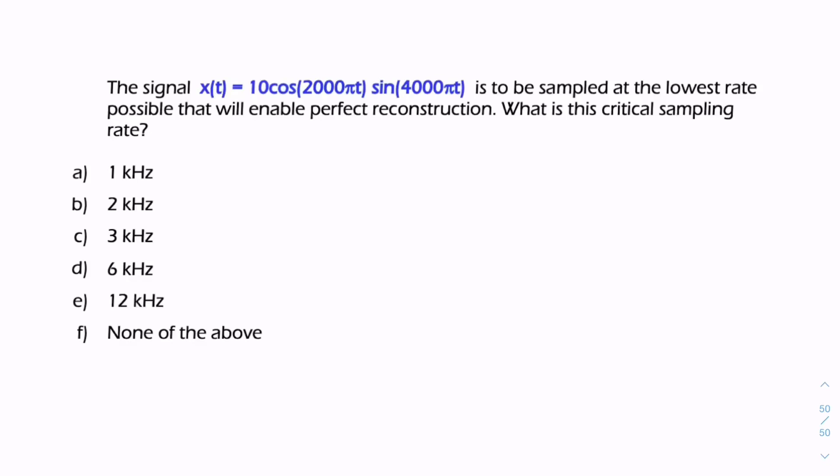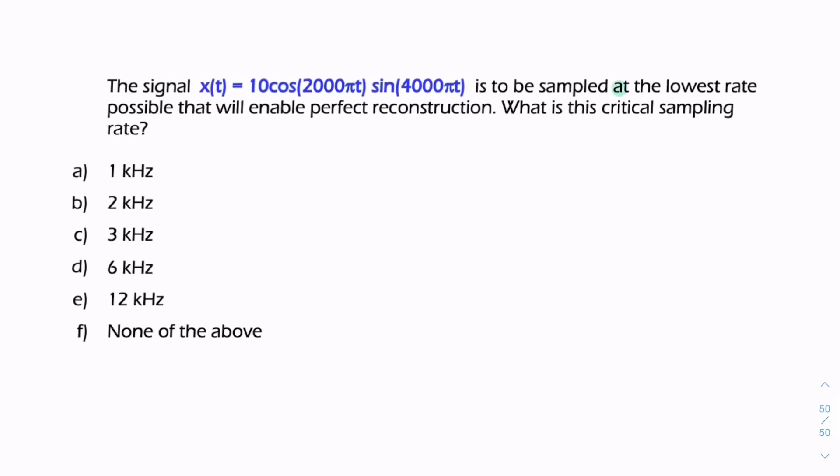In this question we're being asked for the lowest sample rate, so being asked for the Nyquist rate, and we're given a signal x(t) that's a product of a cosine and a sine. So when you have a cosine multiplied by a sine, you'll end up with two terms - you'll end up with a sum term and a difference term.